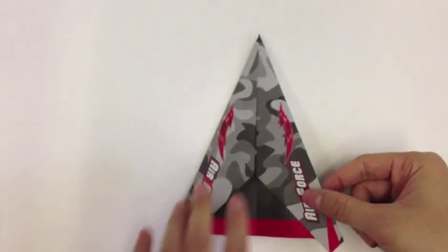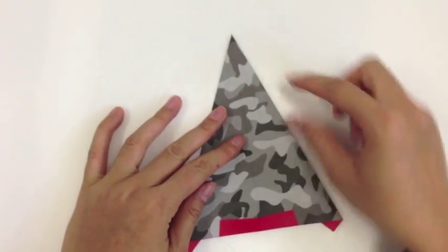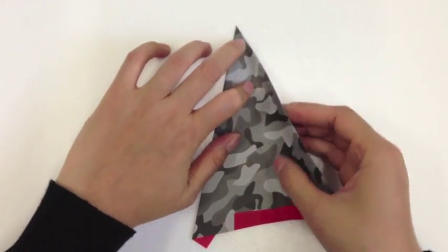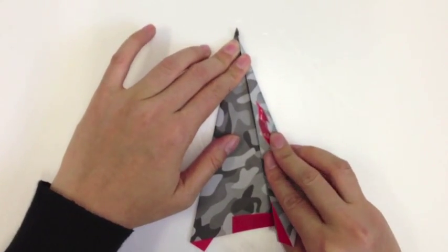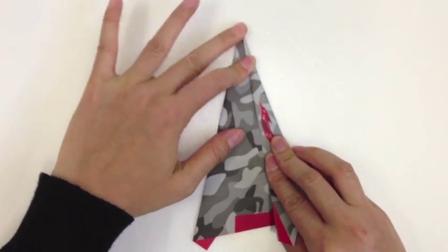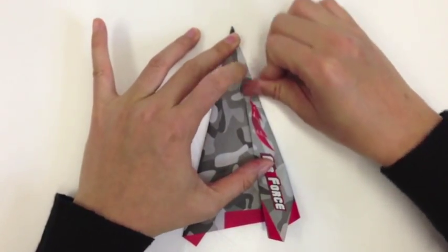Okay. So we're now going to turn the whole thing over, and we're going to take the two outer edges and fold them in towards the middle again. So taking the outside edges and folding along the edge.